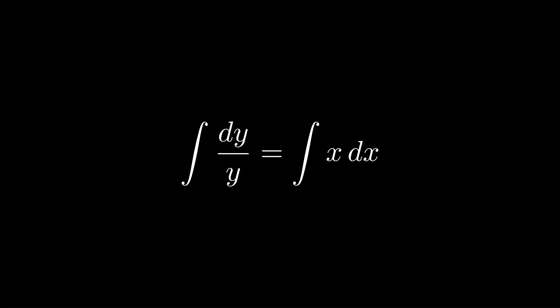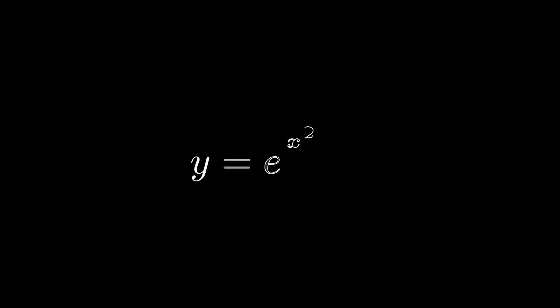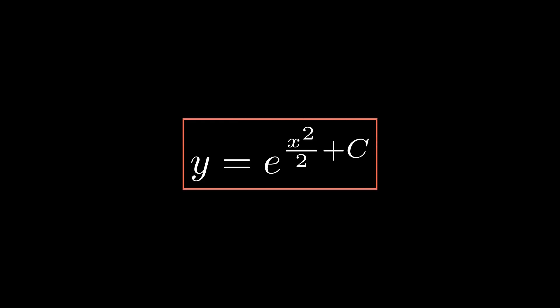All we need to do is integrate both sides, giving us a function of y equal to a function of x. Then we raise both sides to e and get the solution y equals e to the (x² / 2 + c).